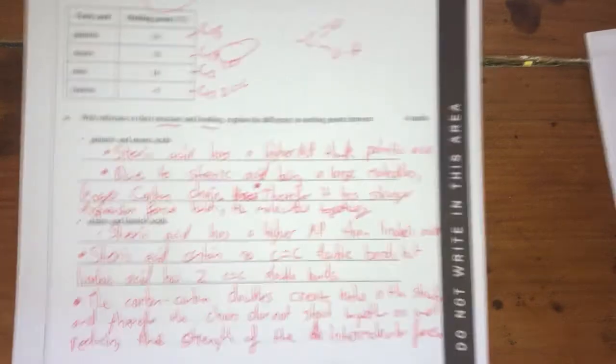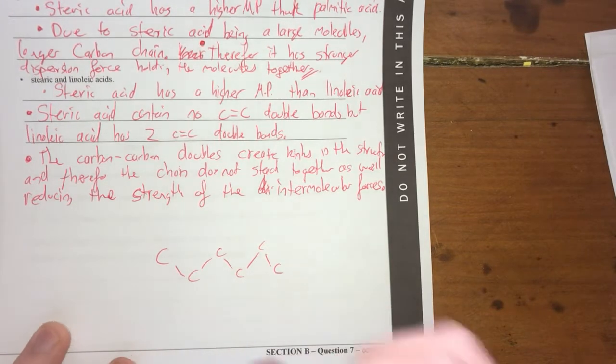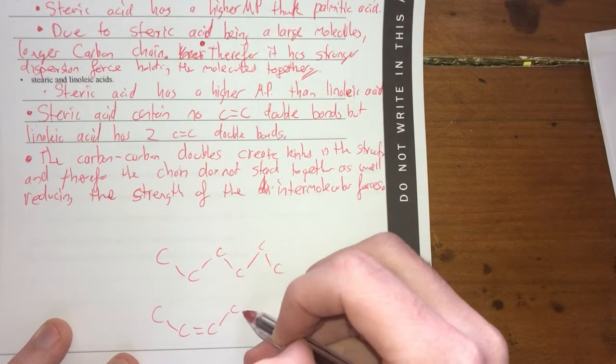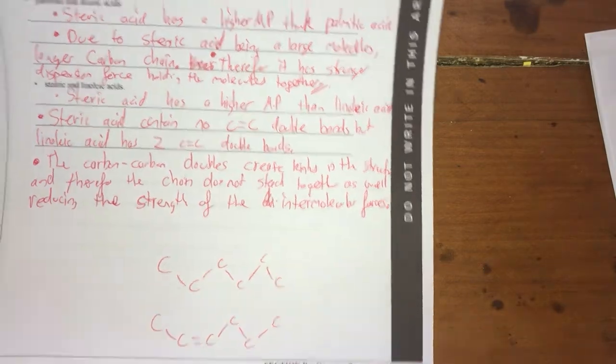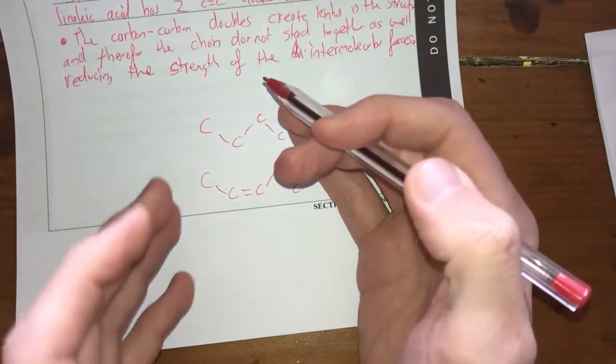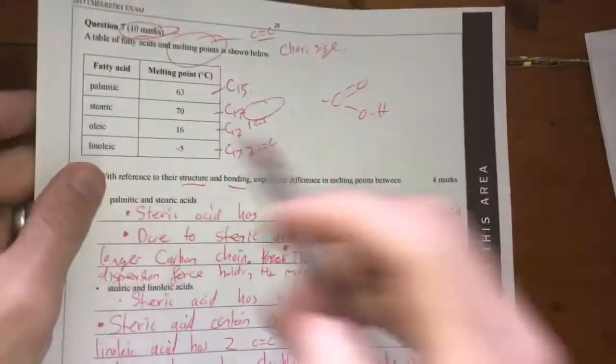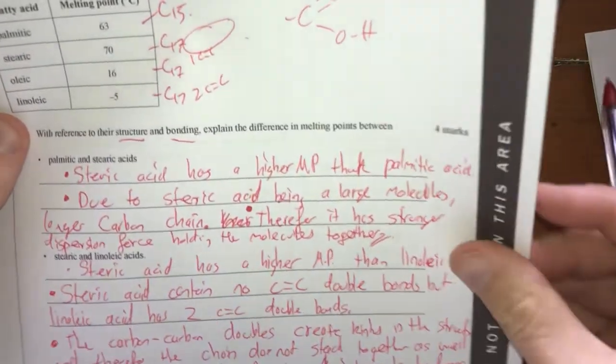When we have just single bonds, we've got just a nice straight chain there. As soon as you chuck in some double bonds, you end up with random shapes forming. And this area here makes it not able to stack together. So therefore, because they can't stack close together, the dispersion forces aren't as strong and can be overcome a lot easier. So therefore, you end up with a much lower melting point when you have carbon-to-carbon double bonds in your molecule.